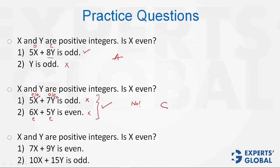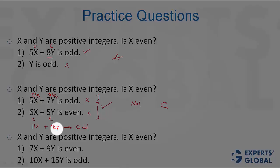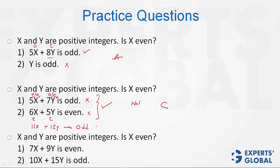You could have also done this question a different way. Add the two, you get 11X plus 12Y. That is when you are combining, 11X plus 12Y is odd plus even, odd. Now, 12Y is bound to be even, and therefore 11X must be odd. If 11X is odd, X is odd. So on combining, we can say that X is odd, and therefore we get no as an answer.